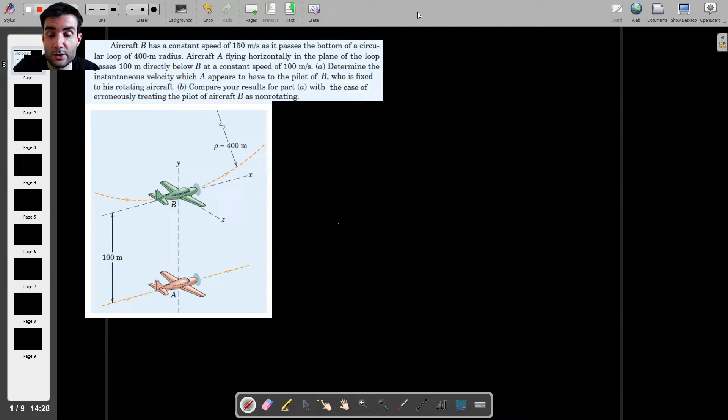Now, 100 meters below aircraft B, there is aircraft A, which has a constant velocity. So it has a constant speed, and it's traveling in a straight line. And that speed is 100 meters per second.